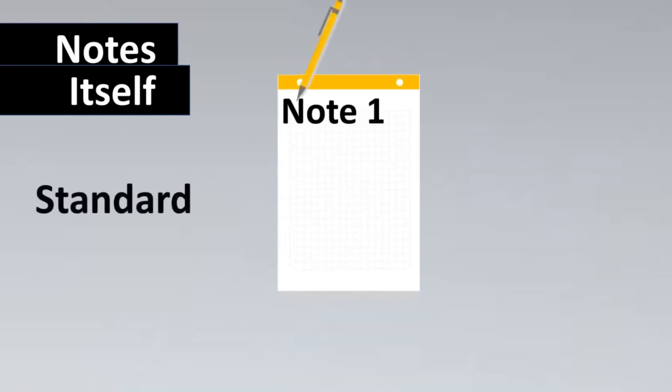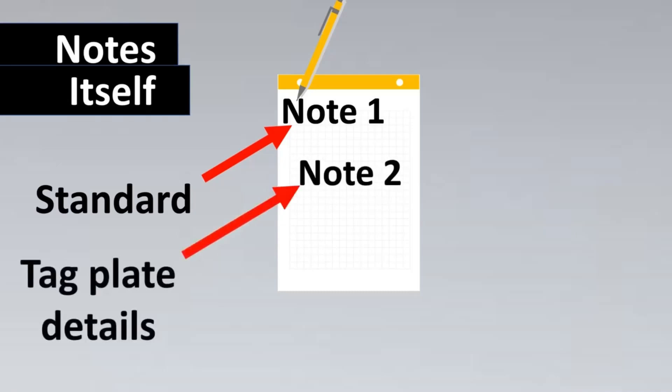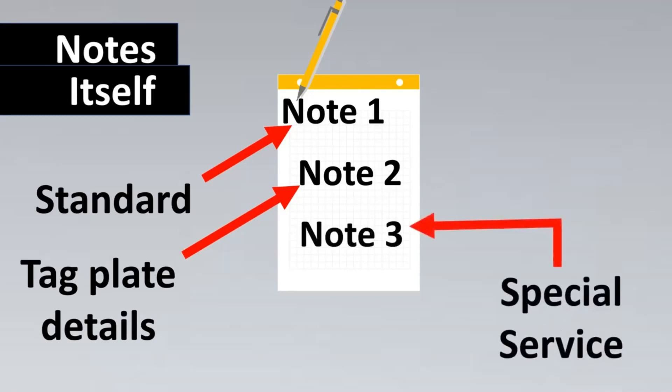Other than that, in the instrument itself you might have certain details which you would not be able to cover in the form. So we have the note section. In the note section, for example, we can say note one refers to a particular standard like NACE certification required, etc., or what client standards it should refer to. The second thing is the tag plate details. Sometimes in the note the tag plate details are given, or the third thing is some special service for that particular instrument like hydrogen service where you require gold plating. I've made a separate video on that. You could refer to such cases where you can mention in the note section.